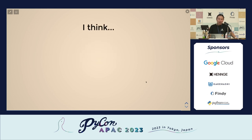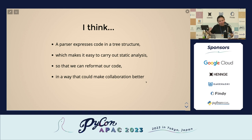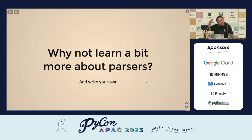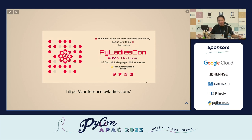Conclusion: expressing code in a tree structure is a very good way to analyze it and understand how Python interprets our code. We can make it nicer by reformatting it. Using a reformatter will make your code easier to use for many people and easier to collaborate on — so we should learn more about it, and maybe if you need to, you can write your own. There will be a PyLadies poster upstairs — you can visit, talk to some PyLadies, and support PyLadies. Thank you very much, that's the end of my talk.